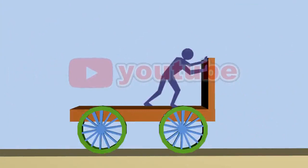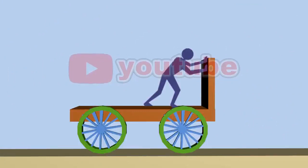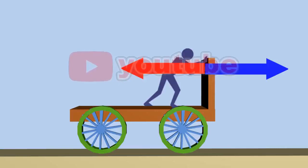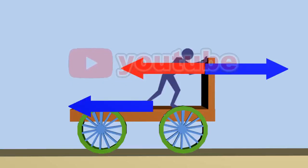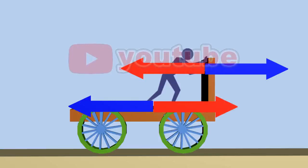Example: A man stands on a chariot and pushes it. Does the chariot move? Answer: The man applies a force on the chariot, and the chariot applies a force back on the man. The chariot does not move because the man simultaneously applies the same amount of force to the chariot with his foot, so the forces applied to the chariot cancel each other out.